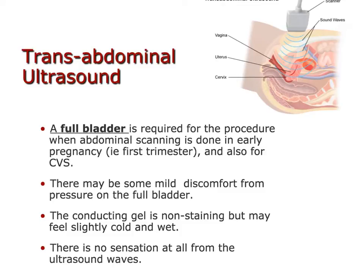Once a woman is towards the end of her first trimester, and definitely in the second and third trimesters, we'll do ultrasounds abdominally. This is the reverse of the transvaginal one — here you would like the woman to have a full bladder, especially at the end of the first trimester and early second. A full bladder will push the uterus up so you can see it transabdominally. Gel is placed on the woman's belly, and through sound waves you're able to visualize that fetus.